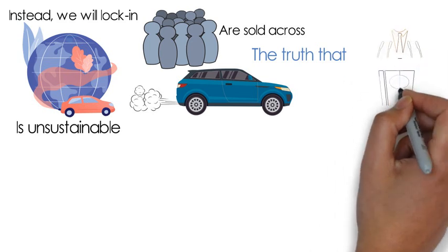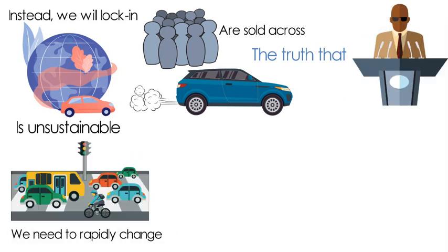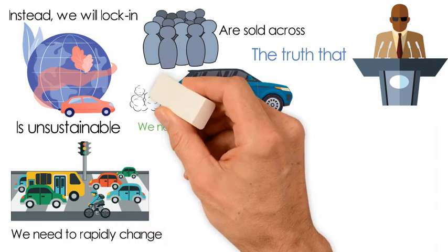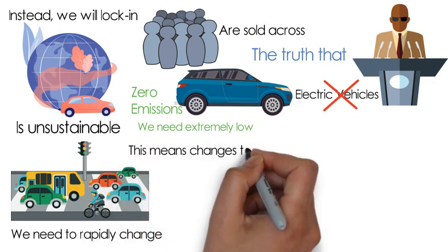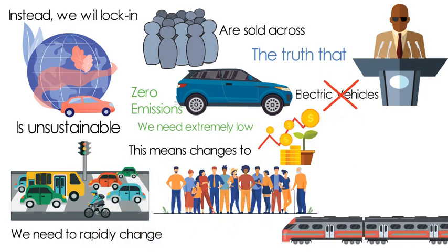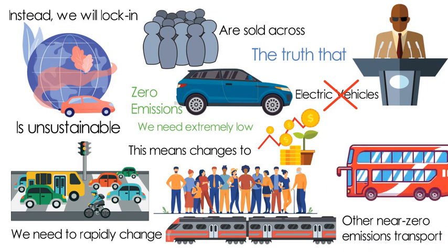The truth that politicians don't want to tell you? We need to rapidly change how we move. We need extremely low or zero emissions transportation options, not just electric vehicles. This means changes to society, including investment in trains and other near-zero emissions transport that rapidly move large amounts of people.